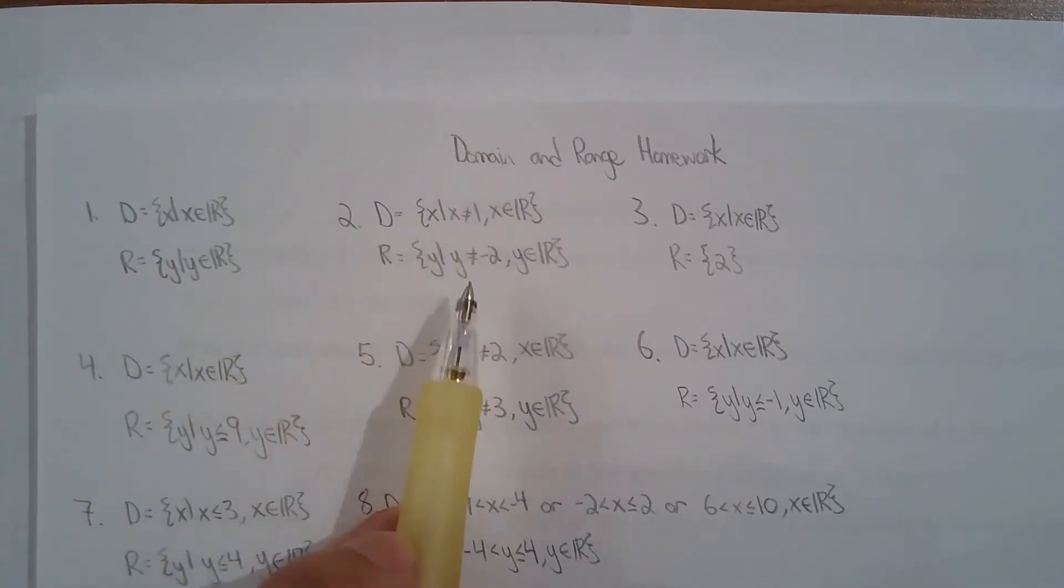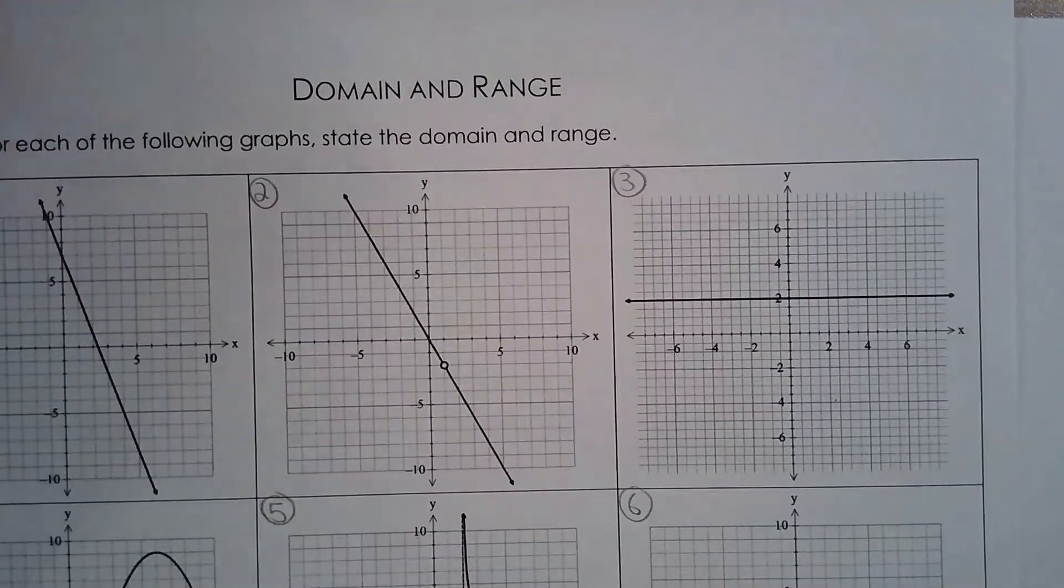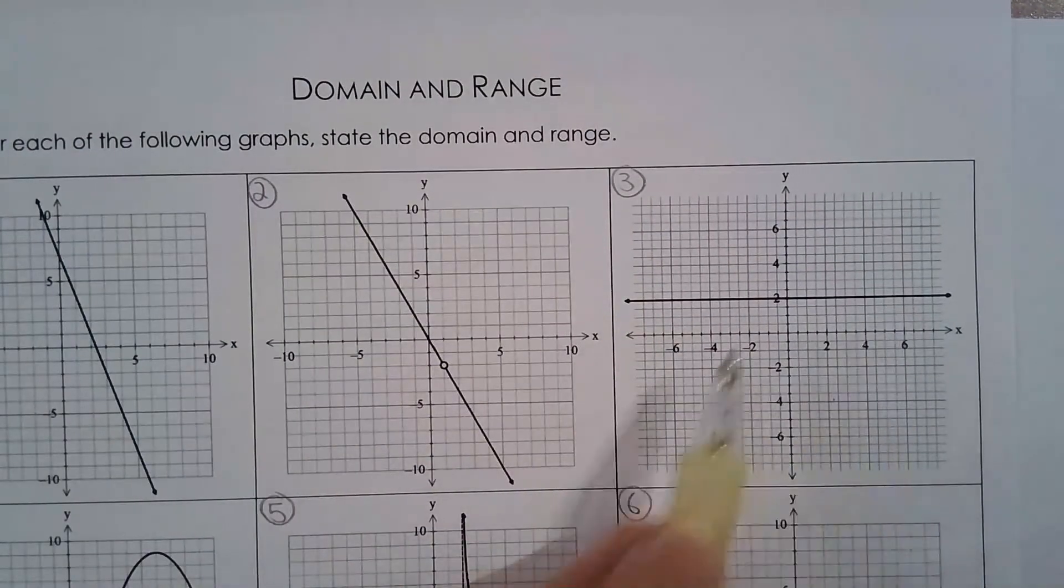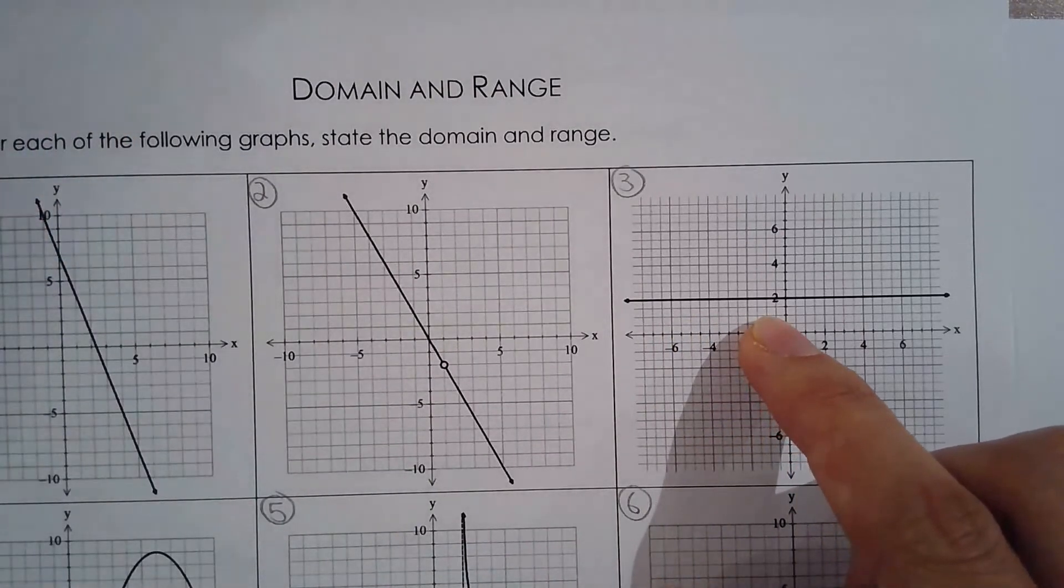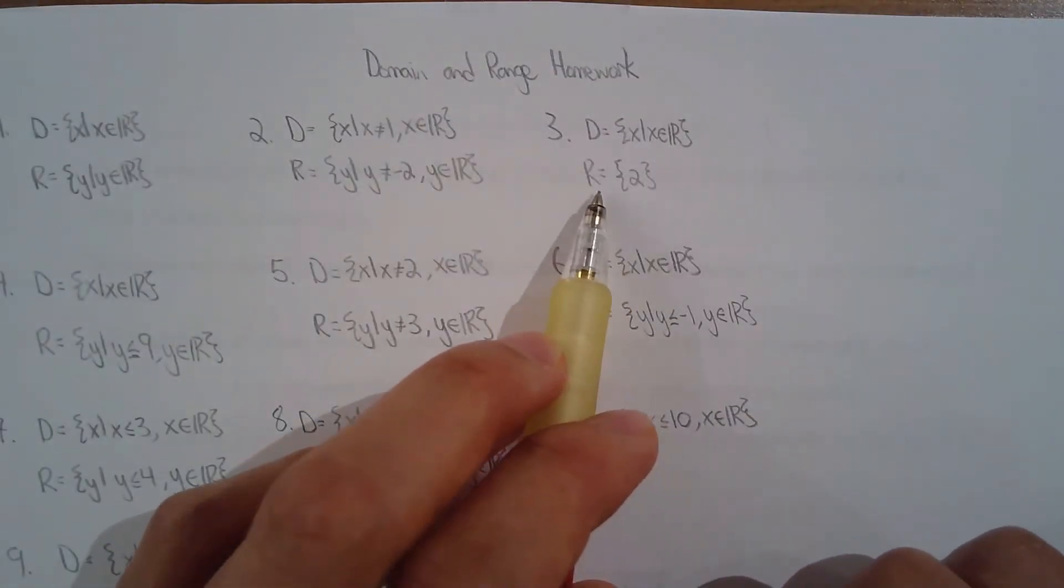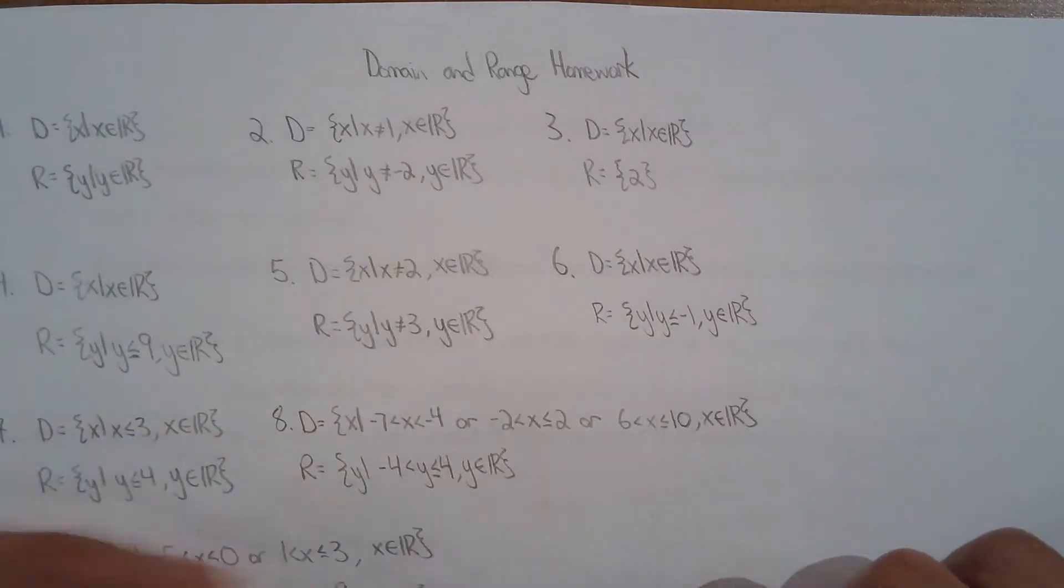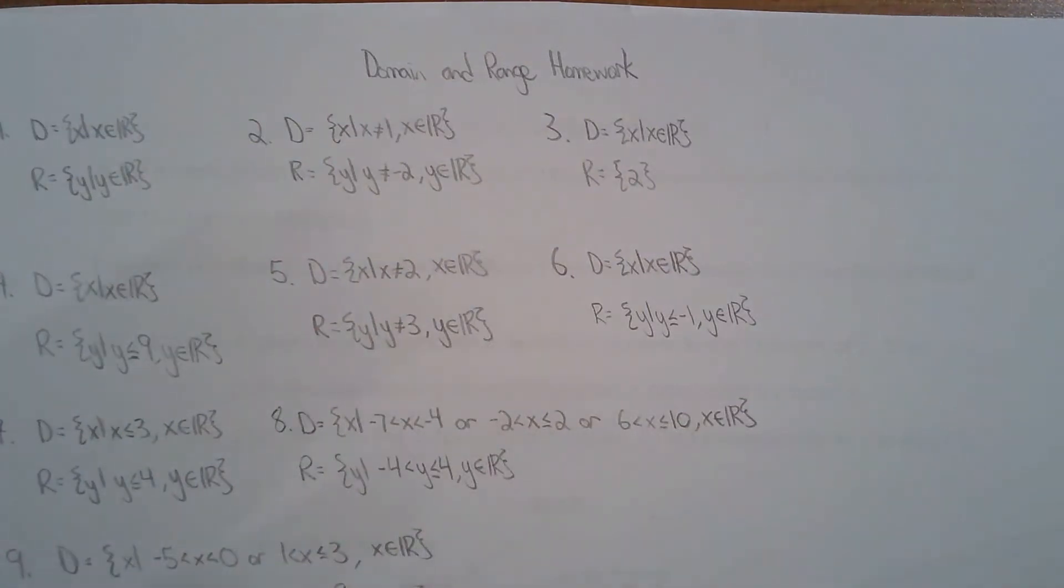For the third graph, you basically have X can be any real number. Now if you look at all the possible values for Y, it's actually a little boring. Y has to be two. There's only one number that Y can be, so if that's the case it's very simple to state the range. Just say Y, or the possible values for Y is just two. You can just list it out. You don't need set builder notation, you don't need some fancy notation. The Y values are just two. You can list it out as if you were given a set of points.